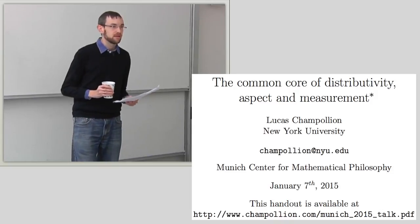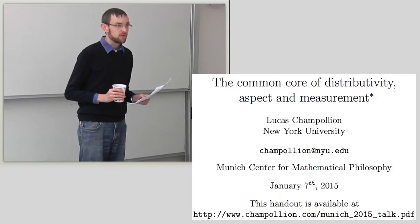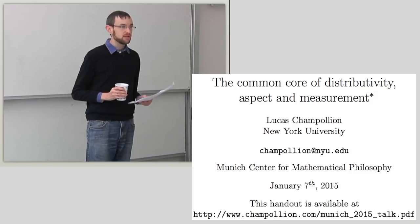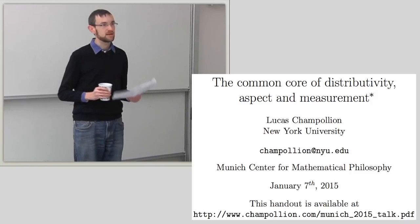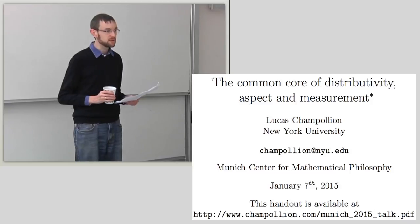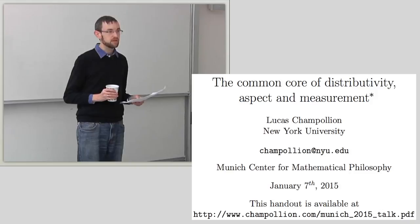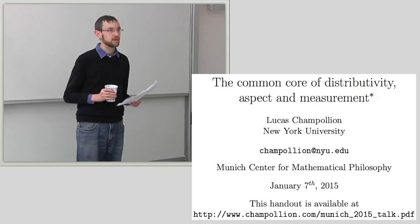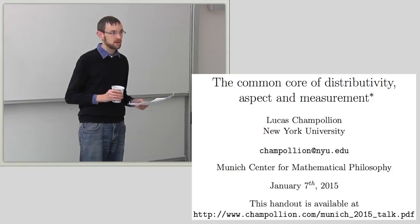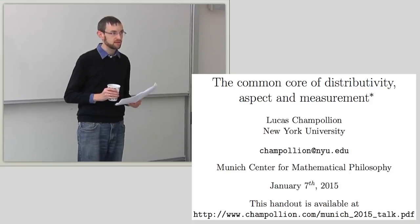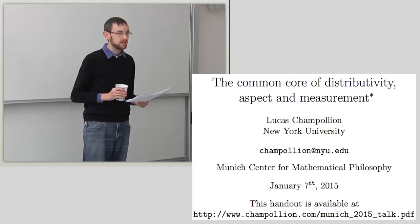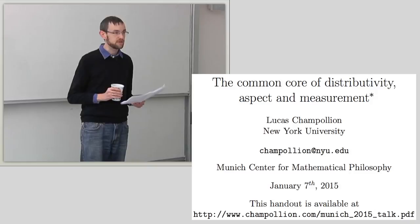What I want to talk about is something that I call the common core of distributivity, aspect, and measurement. I'll explain what I mean by these three terms by way of example. I will introduce three puzzles, one from each of these domains, and then suggest that there is a common solution to all these puzzles. This common solution can be given in terms of a higher-order property that I will call stratified reference.